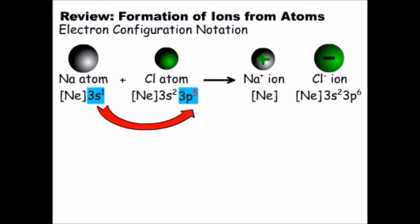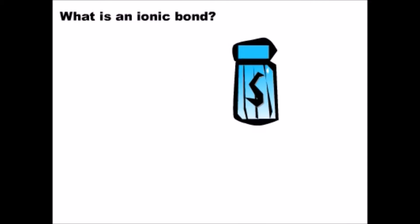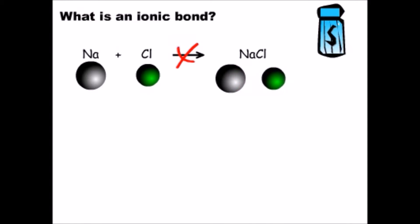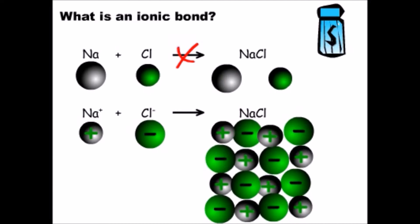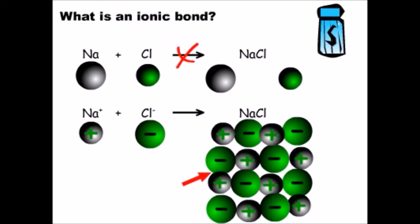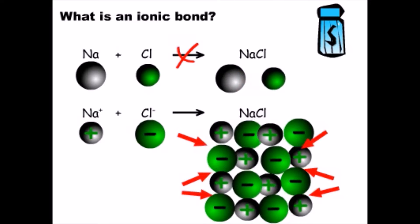Now we've reviewed the material that will help us answer the question: what holds the sodium and chloride ions together in table salt? Neutral sodium atoms and chlorine atoms don't combine to form sodium chloride under normal circumstances. It's only when sodium donates an electron to chlorine — giving us sodium ions and chloride ions — that we get sodium chloride. There must be some kind of attraction between the positive and negative ions. This electrostatic attraction between positive and negative ions is called an ionic bond.